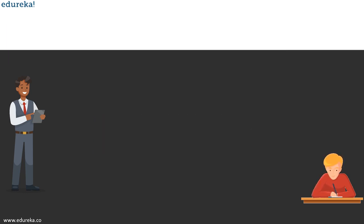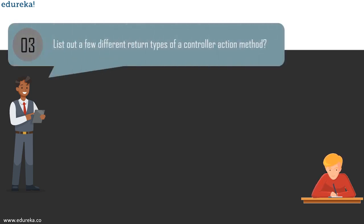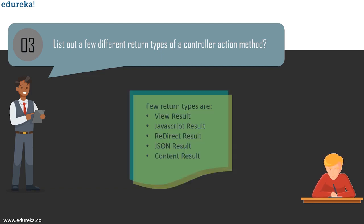The next question is: list out a few different return types of a controller action method. Like every other component, controller actions also have return types. A few of them are: View Result, JavaScript Result, Redirect Result, JSON Result, and Content Result. These are the different return types of a controller action method.